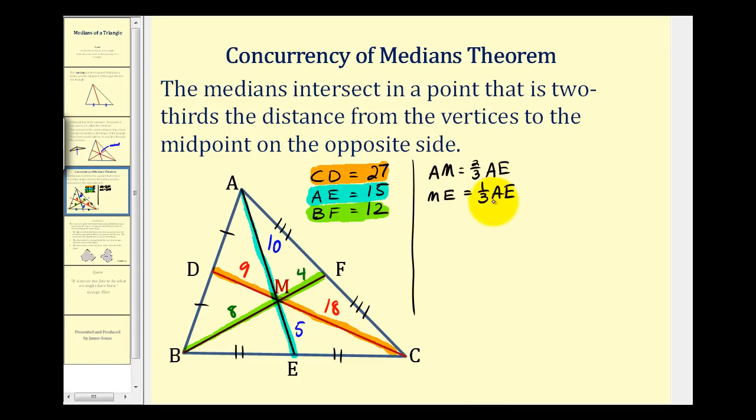There's also one more connection that we can make. If we compare AM and ME, notice that ME is half the length of AM, and this property will also always hold true. Hopefully that makes sense. If AM is two-thirds AE and ME is one-third AE, ME is always going to be half of AM.